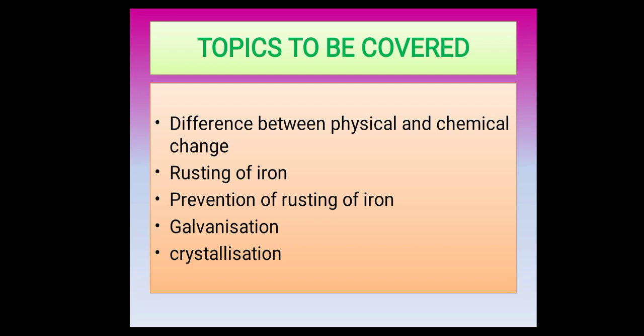Today we will learn the difference between physical and chemical change. We will also learn about rusting of iron — what is rusting of iron, how iron gets rusted, and how to prevent this rusting of iron. We will also cover what is galvanization, what is crystallization, and how the crystallization process takes place.